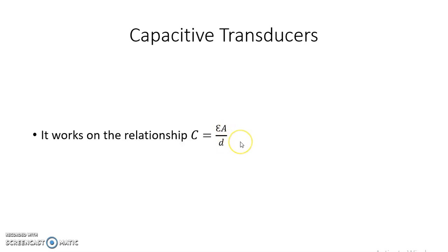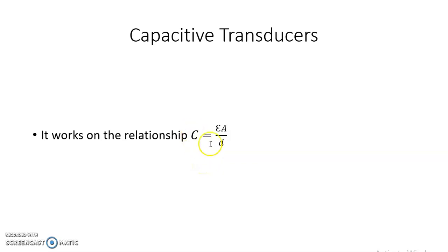Any physical quantity which can cause a change in either epsilon, A, or d will cause a change in the capacitance of the parallel plate capacitor. Therefore, that physical quantity can be measured in terms of change in capacitance.